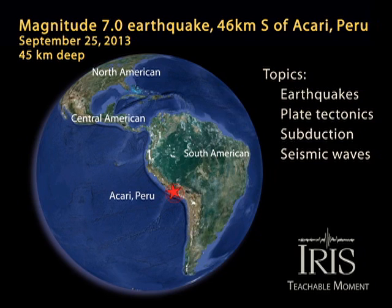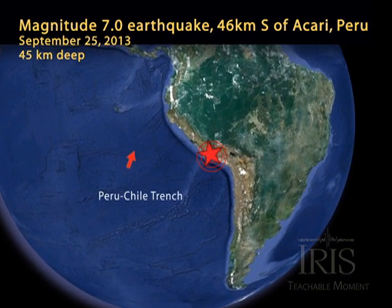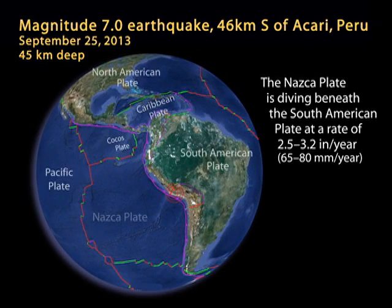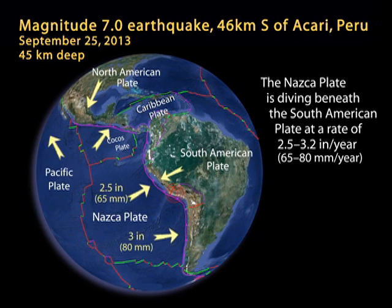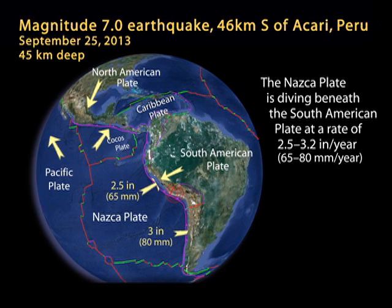The South American continent is bounded on the west by the Peru-Chile Trench, a subduction boundary that extends for over 4,000 miles, forming one of the world's largest active plate boundary zones. The oceanic Nazca Plate is diving beneath the continental South American plate at a rate of about 2.5 to 3 inches per year.